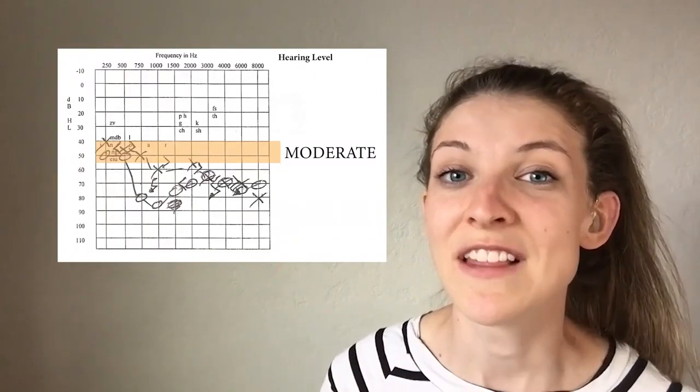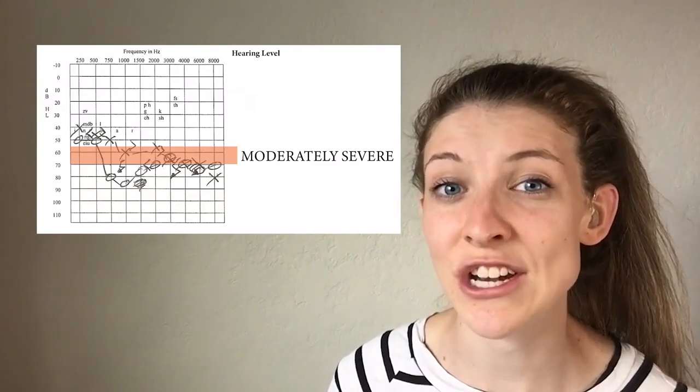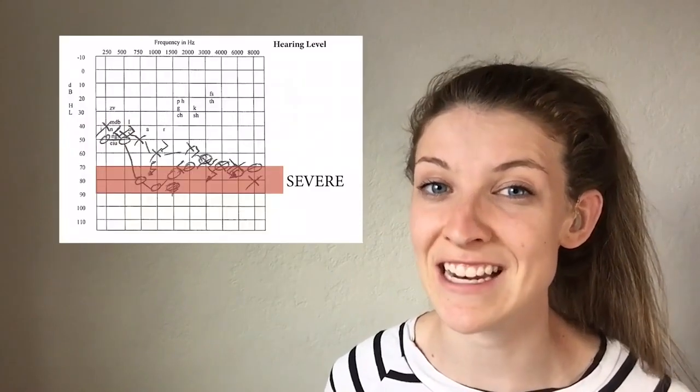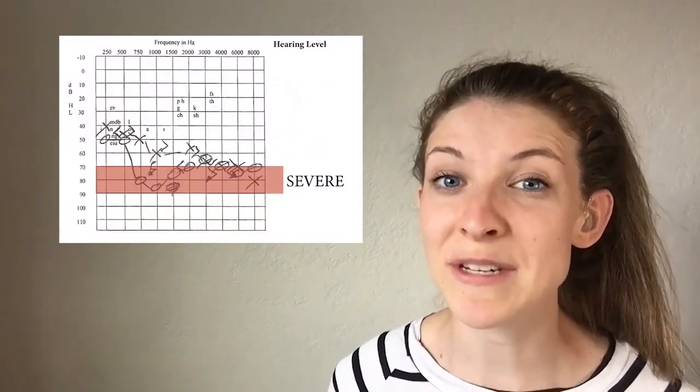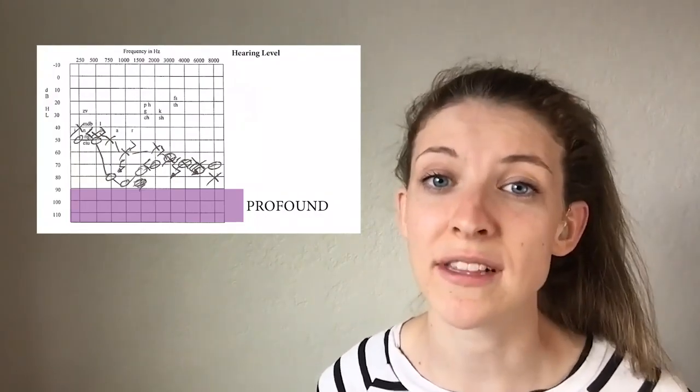People with a mild loss can experience difficulty hearing in noisy settings. The next range, 41 to 55 decibels, is a moderate loss. The next threshold, 56 to 70 decibels, is considered a moderately severe loss. The next threshold, 71 to 90 decibels, is a severe loss — people have difficulty understanding in all settings. And the last threshold is any loss greater than 90 decibels; anyone with this loss would have complete difficulty communicating orally in any situation.